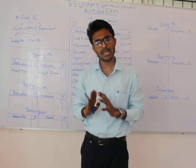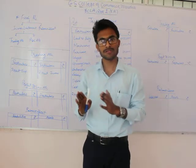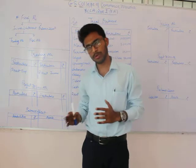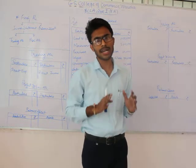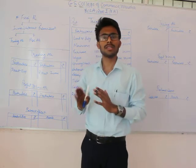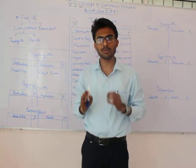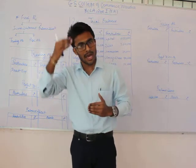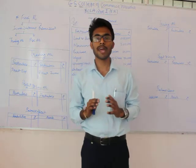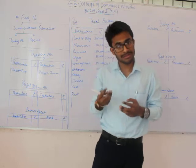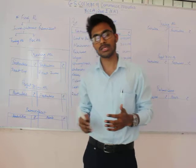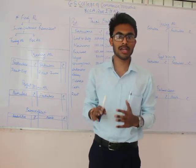The Balance Sheet is not any kind of account like Manufacturing Account, Trading Account, P&L Account, or P&L Appropriation Account. Those are all accounts; the Balance Sheet is not part of these accounts. It is just a statement which shows your Assets and Liabilities. Generally, there are three things in the Final Account: Trading Account, P&L Account, and Balance Sheet.